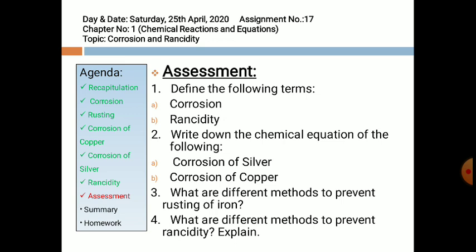Now here are a few questions for you. Define the following terms: corrosion and rancidity. Write down the chemical equations for corrosion of silver and corrosion of copper. What are the different methods to prevent rusting of iron? And lastly, what are the different methods to prevent rancidity? Answer with explanation.